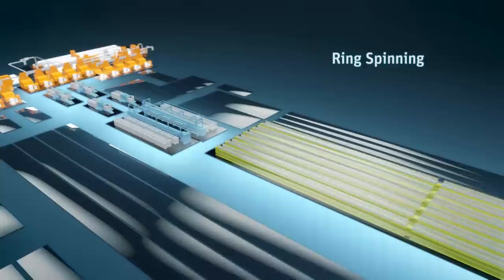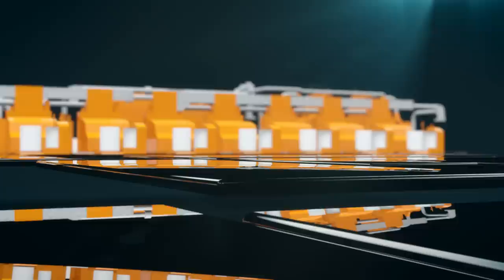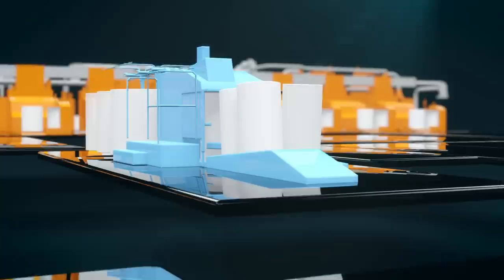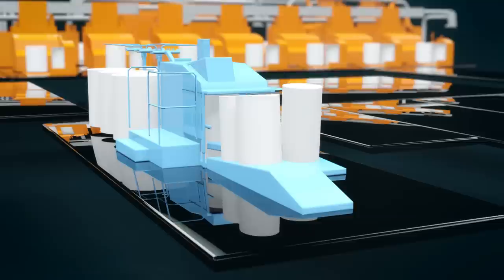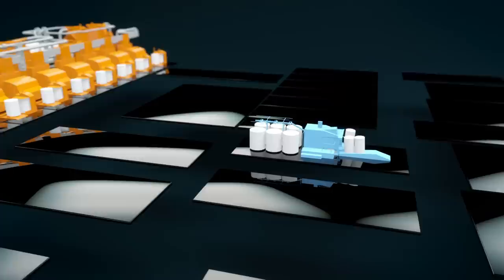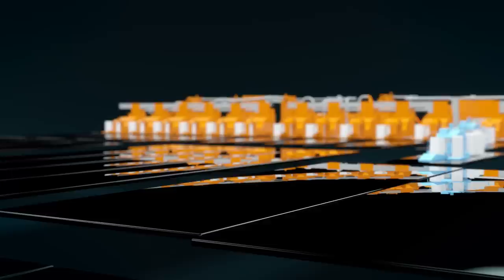Ring yarn is the classic product in the textile world. It is characterized by its enormous versatility. The draw frame slivers are first fed into an auto-leveling draw frame to equalize the existing thick and thin places. High sliver evenness ensures consistent yarn quality.